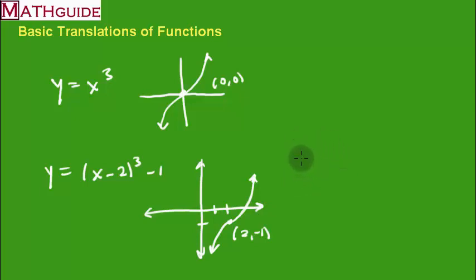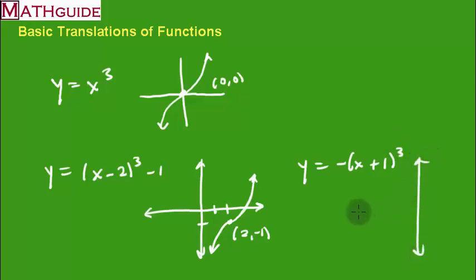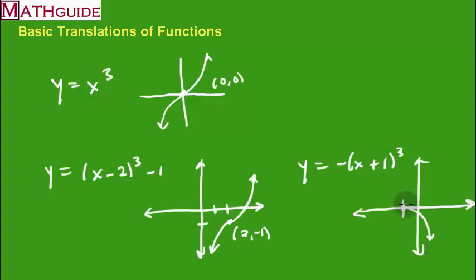Let's try one more cubic: negative (x plus 1) cubed. Because of the minus sign, we flip it over the x-axis, so the right branch now goes down and the left branch goes up — the vertical reverse of the original shape. And instead of the inflection point being at the origin, it moves one unit to the left, giving us an inflection point at (negative 1, 0).